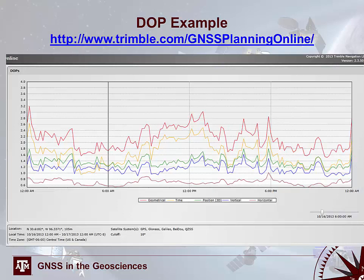Trimble Survey Systems offers a free GNSS planning tool for accounting for PDOP and other dilution of precision measures. You input your location and time, and it returns graphs of DOP variation. PDOP varies through time as a function of the moving, changing satellite constellation, so knowing how DOP changes allows you to properly time your GPS use and survey design to reduce error.